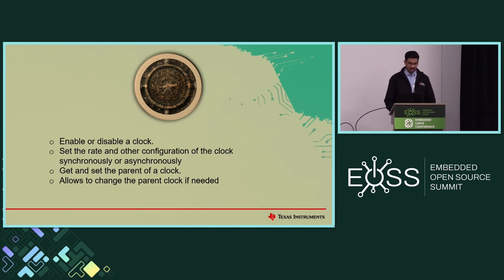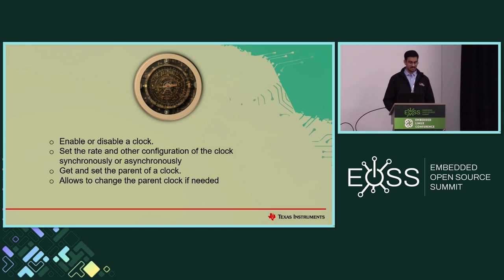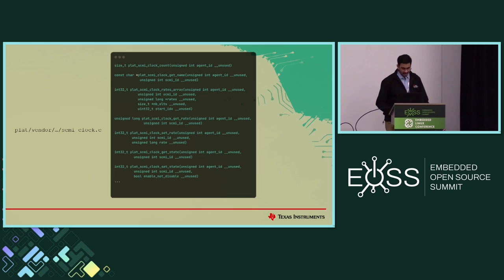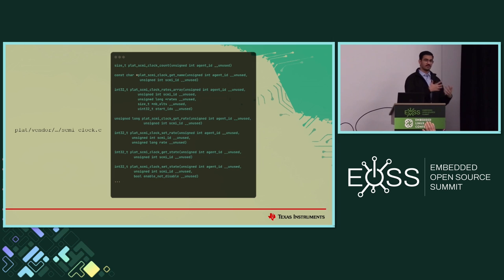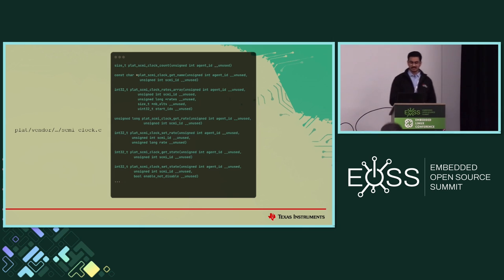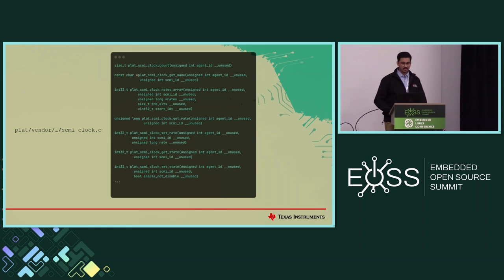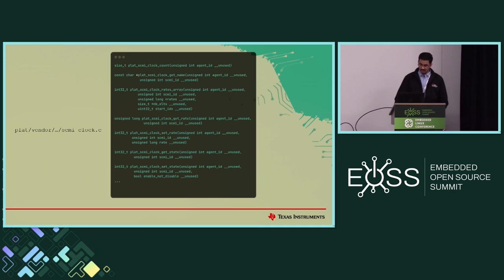Here's clocking in TFA. You can use this to basically enable or disable a clock. You can also set the rate and other configurations synchronously or asynchronously. You can get and set the parents of a clock, and it allows you to change the parent clock if required. Here's a sample implementation inside TFA where you can get the number of clocks in the system, get or set the rates, and get an array of available rates for a particular clock. These diverse platform vendor functions have to be implemented by individual vendors inside ARM trusted firmware. These are the basic functions you'll want to implement when bringing up SCMI on your device: set rate, get rate, and set state.